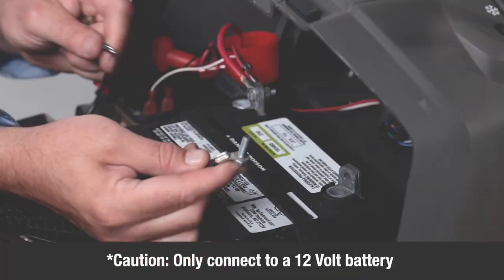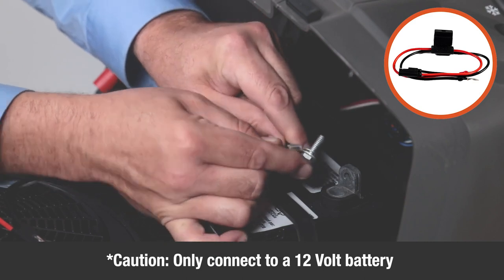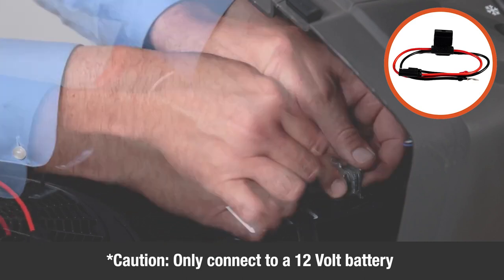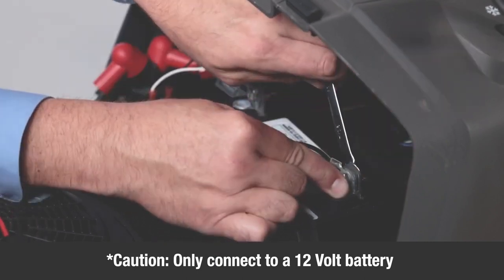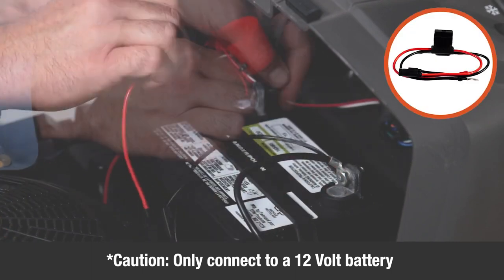Do not connect the sprayer to anything other than a 12 volt battery. Now connect the black ring terminal from the battery wire harness, Part Q, to your power source's negative terminal. Then connect the red terminal to your power source's positive terminal.